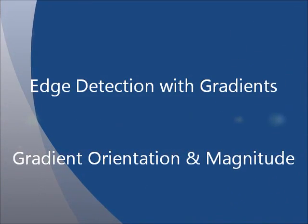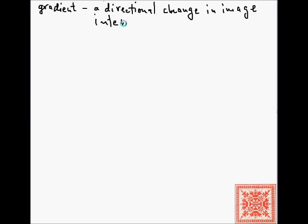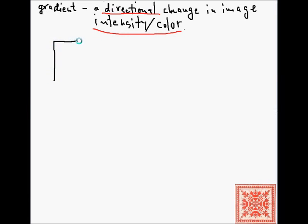In this screencast we'll talk about edge detection with gradients, focusing on gradient orientation and magnitude. A gradient is a directional change in image intensity or color. We'll focus on intensity, though it can also be color.